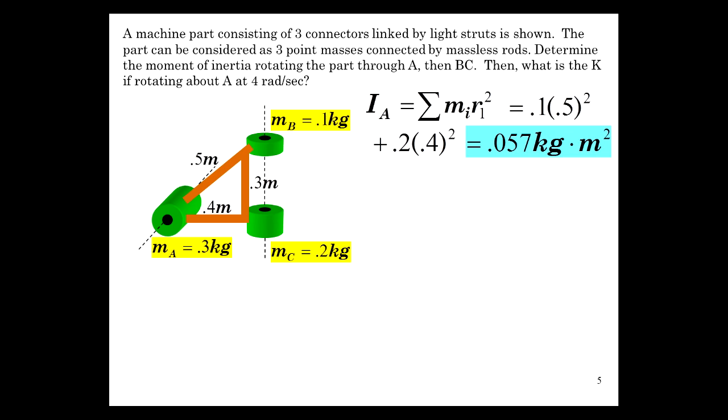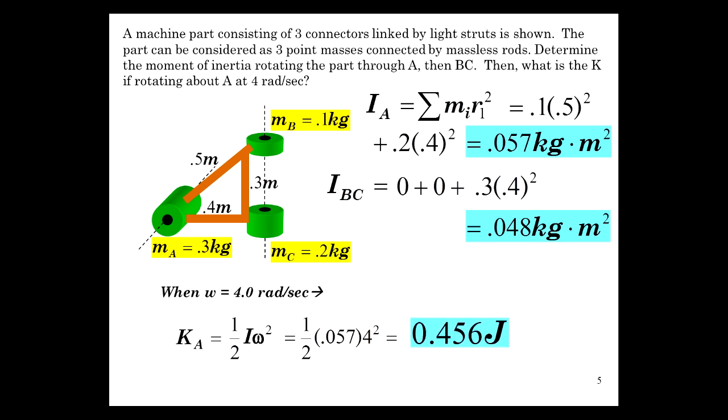So, moment of inertia through A is the sum of the miRis squared, and that's 0.1 times 0.5, that's the distance from this axis of rotation to the connector, plus the mass of C, which is 0.2 times the distance 0.4 squared. And that gives us 0.057 kilogram meters squared. Now let's rotate it through BC. And, of course, these point masses are going to have no moment of inertia rotated about this axis. So, the thing I want to clarify in this little example problem, these look like thick-walled cylinders, but they're really not. They're so small that they have no effective r in and of themselves. So, just deal with that, all right? So, that's 0 plus 0 plus the contribution of this mass, but rotated about here, that distance is 0.4 meters of the 0.3 kilogram mass. So, 0.3 times 0.4 squared, 0.048 kilogram meters squared. Obviously, they're different. So, that highlights how different axes of symmetry will give you different moments of inertia. And, when omega is 4 radians per second, if we're rotating about the A-axis, KA is 1 half I omega squared, 0.456 joules.